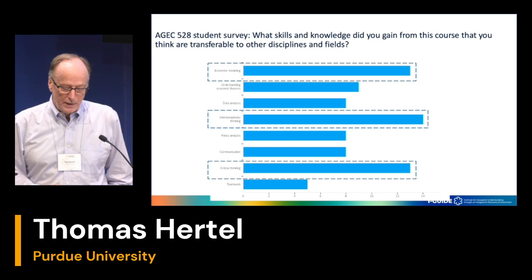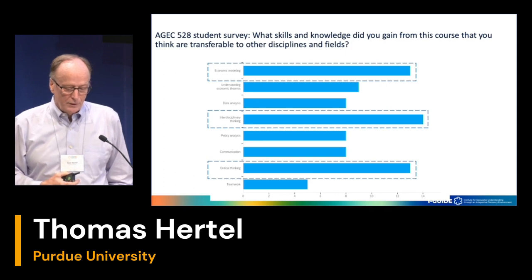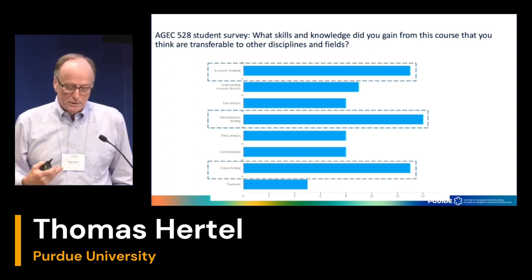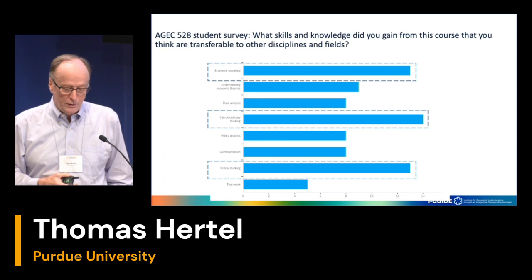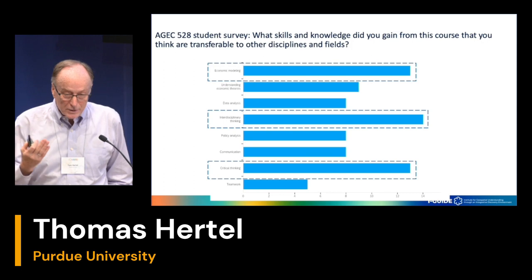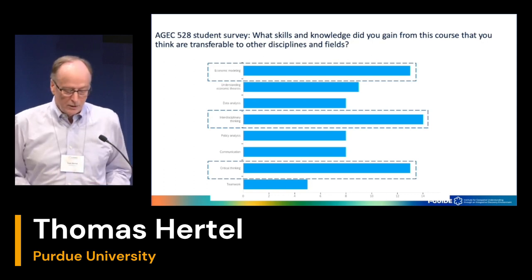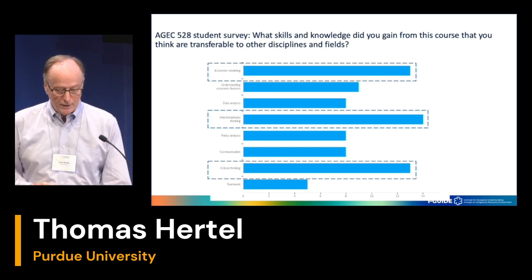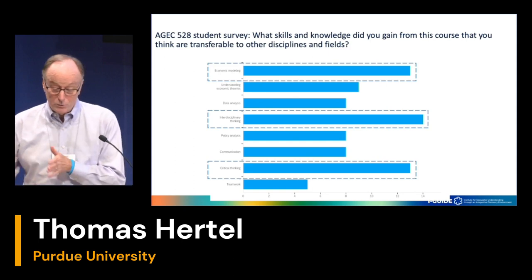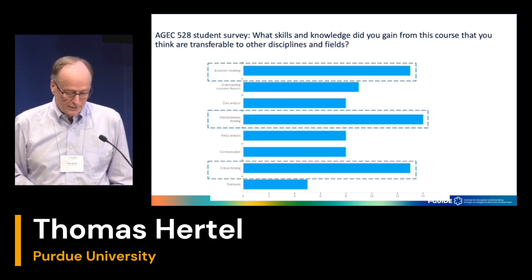Elizabeth has surveyed students in conjunction with this iGUIDE effort, asking what skills and knowledge they gained from this course that are transferable to other disciplines. Economic modeling and interdisciplinary thinking appear prominently. A lot of students come in having been channeled fairly narrowly — this opens their minds to broader thinking, and they often come out with a thesis topic, as was the case with Jonathan and the economic impacts of heat stress. Critical thinking is also something they value.